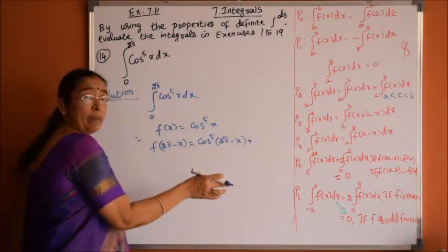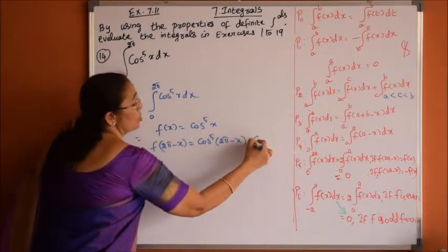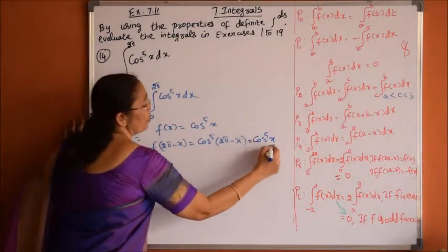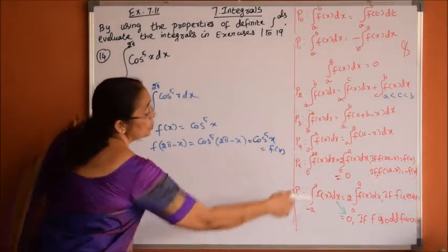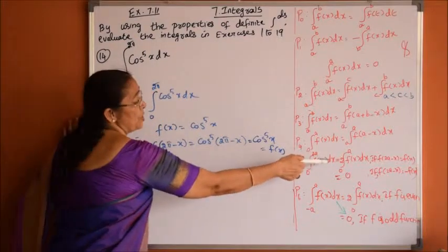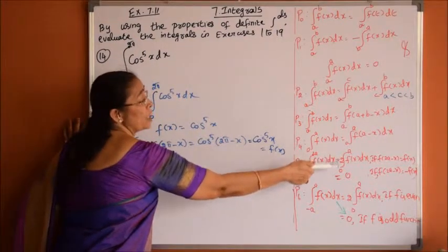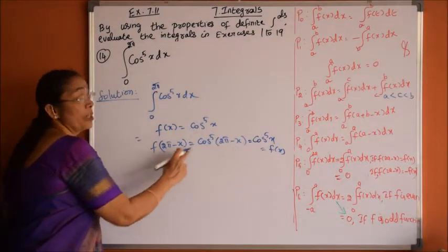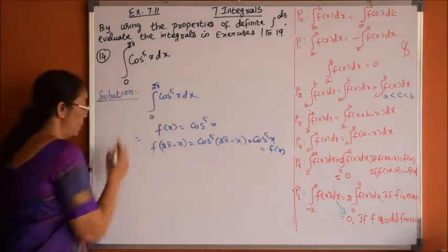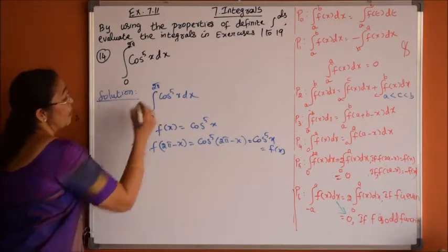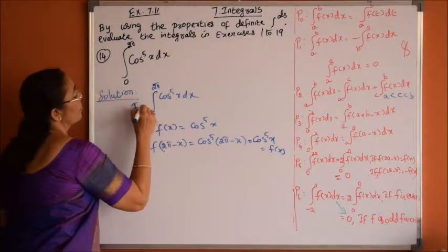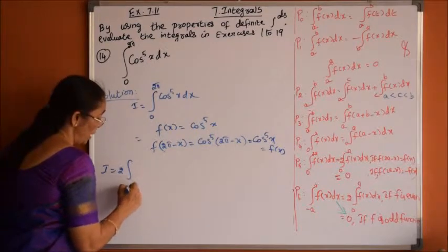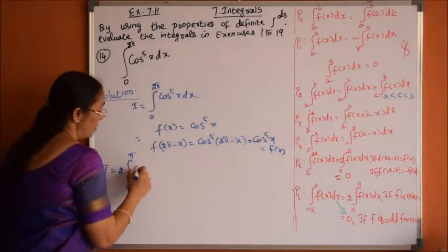Since cos of 2 pi minus x equals cos x, we get cos to the power 5x, which is f of x again. Therefore, using the property that the integral from 0 to 2a of f of x dx equals twice the integral from 0 to a of f of x dx when f of 2a minus x equals f of x, the integral I becomes twice the integral from 0 to pi of cos power 5x dx.